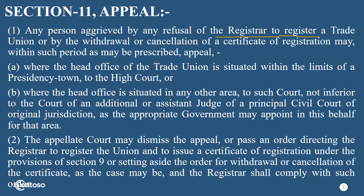The appellant court may dismiss the appeal and issue a certificate of registration under the provisions of Section 9, or set aside the order of refusal or cancellation. The certificate shall comply with such order. If you are not satisfied with the court's decision, you should have to accept the registration order.